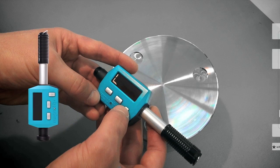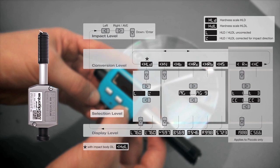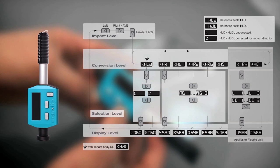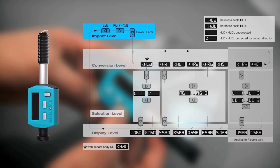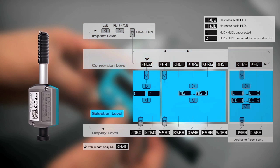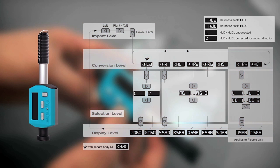To understand how to operate the Ecotip Piccolo, have a look at the following graphic. As you can see, there are four operating levels: the impact, the conversion, the selection and the display level. To navigate within these different levels, press the respective keys.